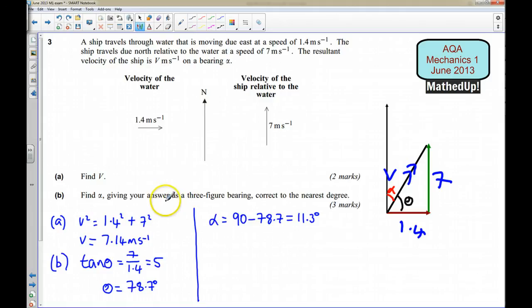Now here it's asked us to give our answer as a three-figure bearing to the nearest degree. So that means that our bearing, alpha, is going to be equal to 0, 1, 1 degrees.